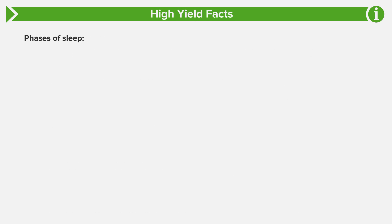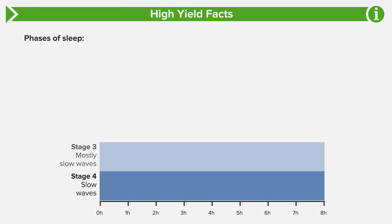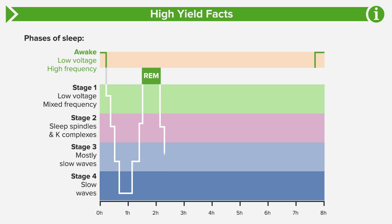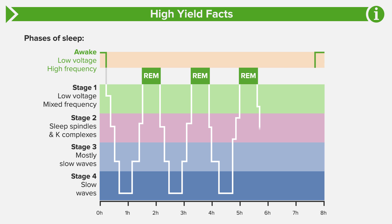Now let's discuss the phases of sleep — another high-yield topic. There are five phases of sleep. The first four are non-rapid eye movement phases, called NREM, and the fifth phase is REM, or rapid eye movement. The phases progress cyclically from NREM 1 through REM and then begin again at NREM 1. Each cycle lasts roughly 90 to 120 minutes.